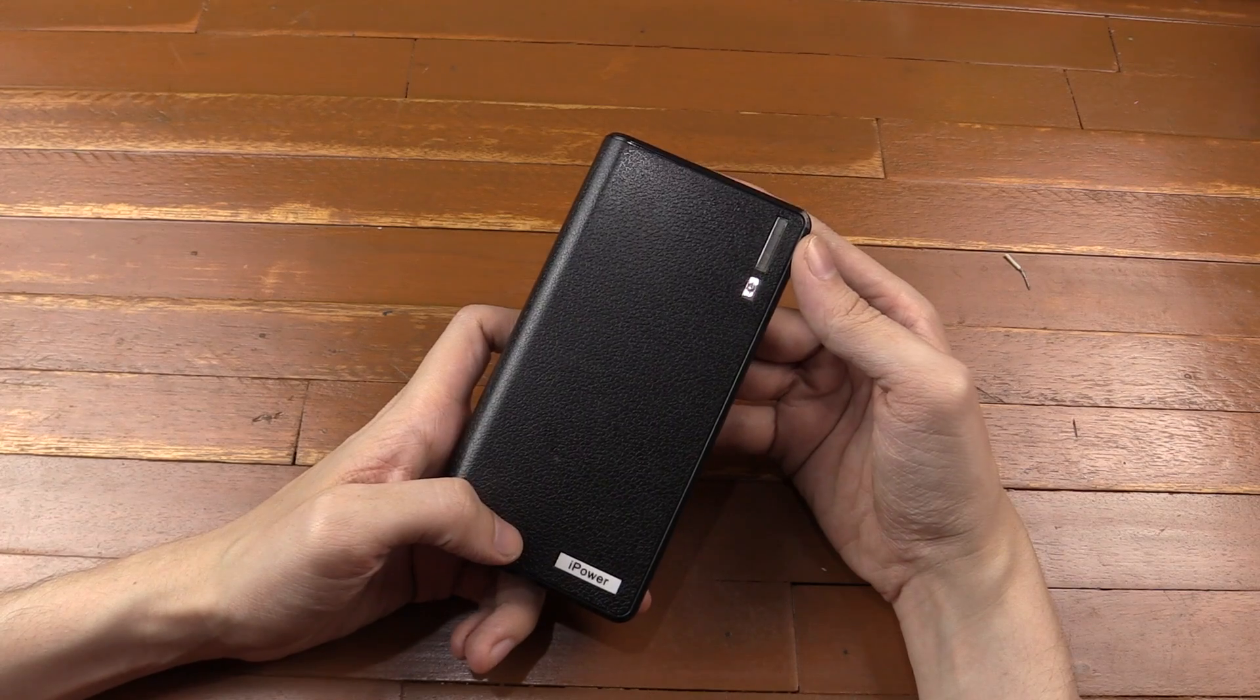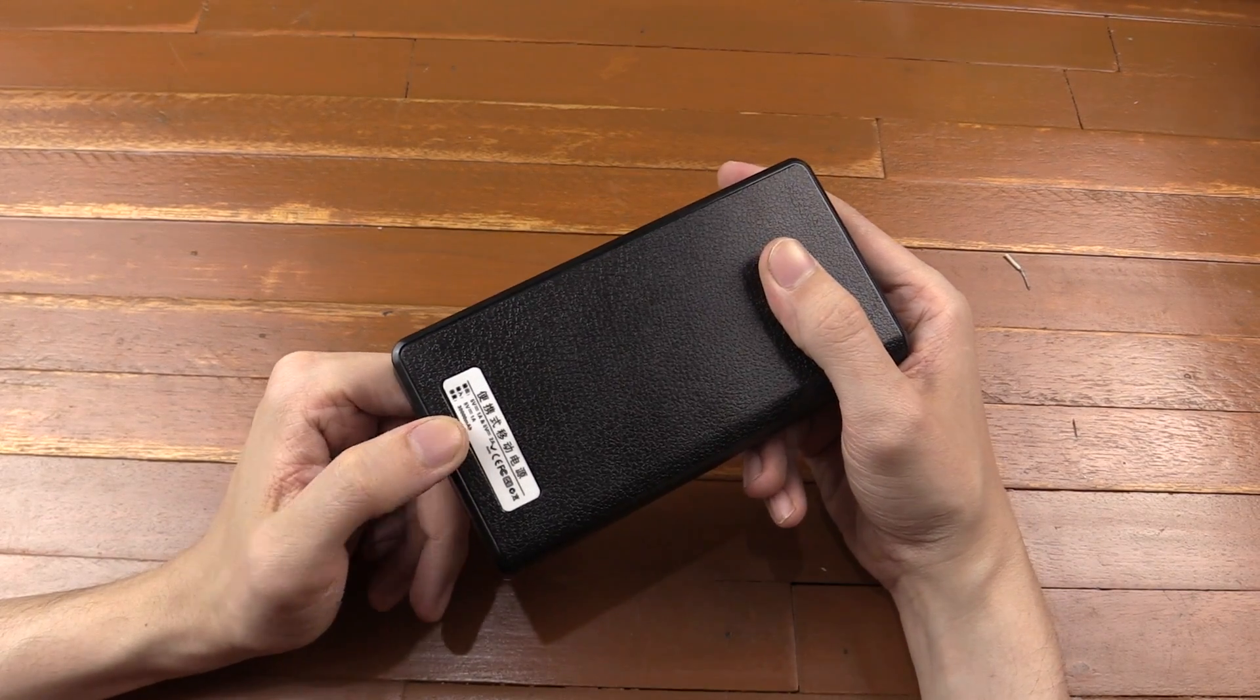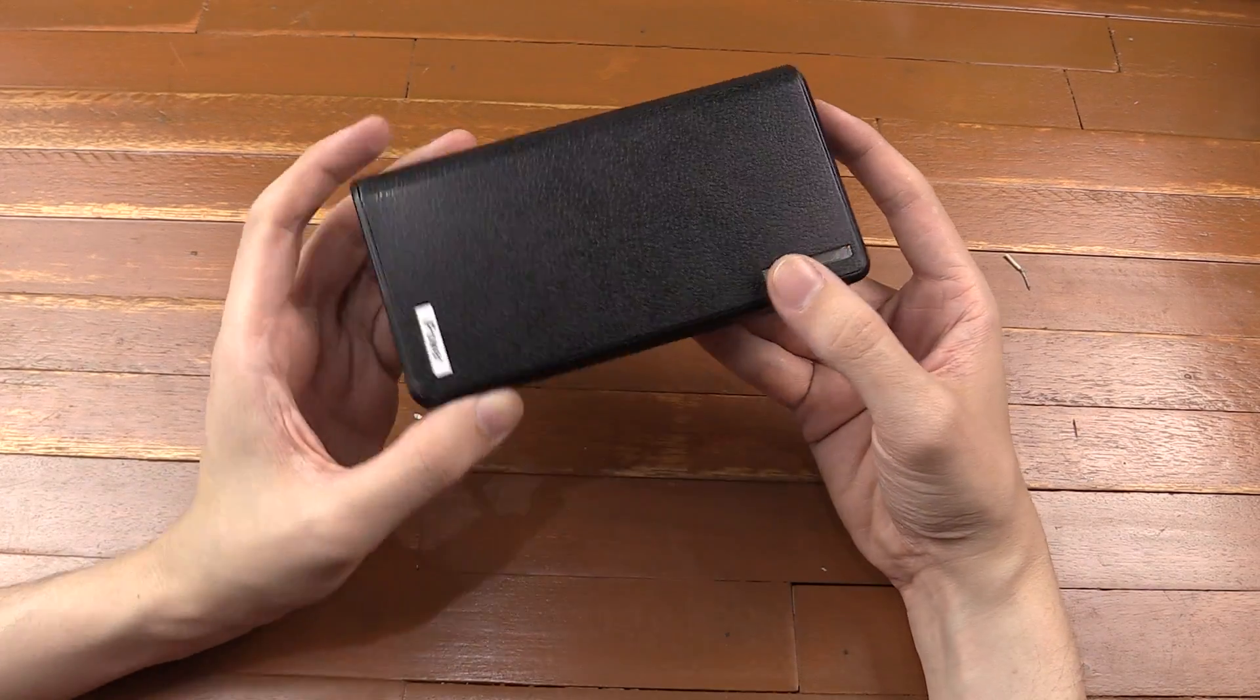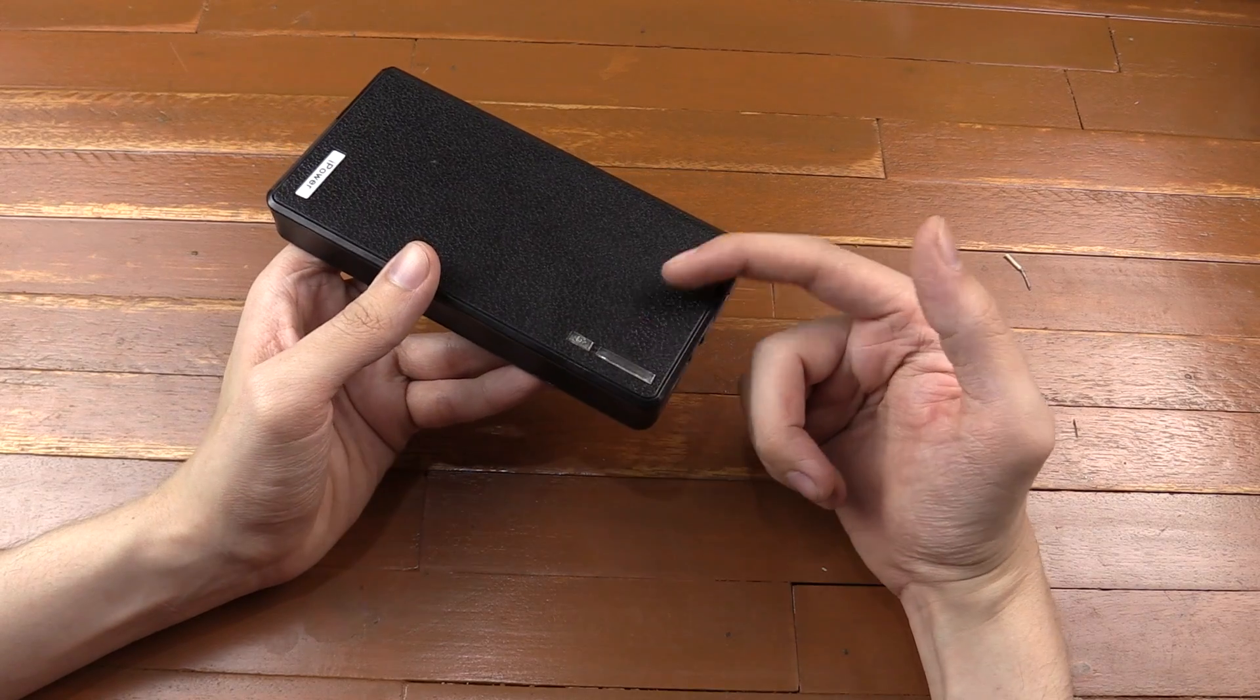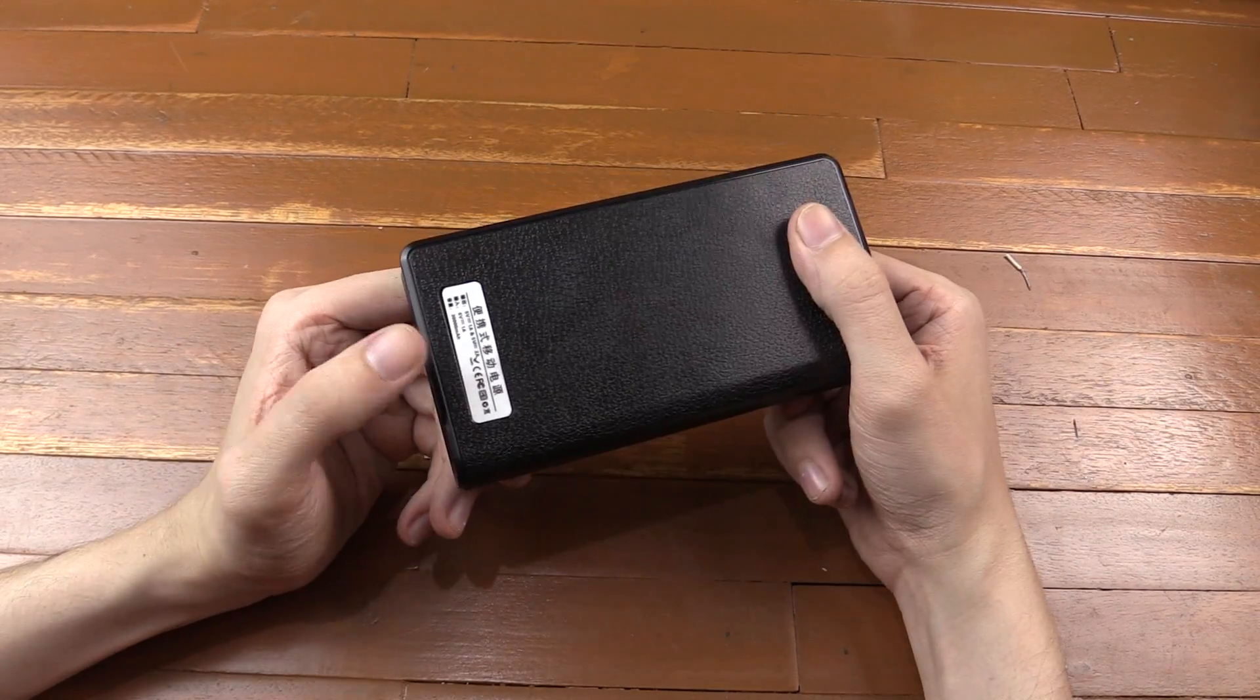So based on those results, we can confirm for sure that this is not a 30,000 milliamp-hour battery. It's not even a 20,000 milliamp-hour battery. And bear in mind that some of the power that was being consumed would have actually been lost to heat and different losses, efficiency losses, inside this. So yeah, that rating is absolute nonsense.